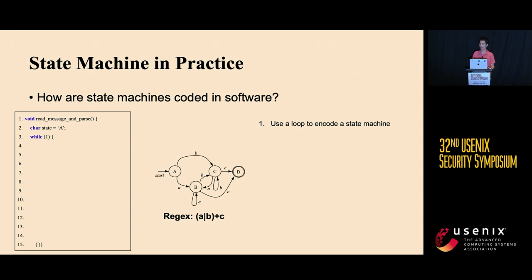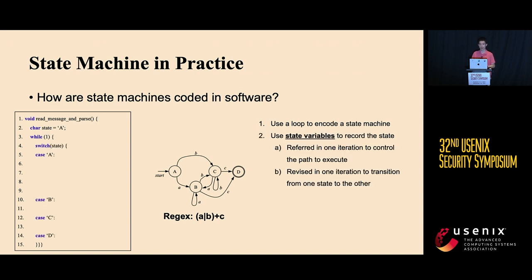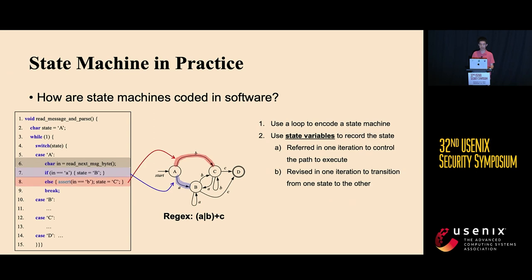At the second line is the state variable called 'state', and the loop is defined at the third line. State variables are used to dispatch execution to different paths in each iteration, with each path implementing logic for a specific state. At the sixth line, the state machine reads an input byte from the input stream. It then checks whether the input byte is character A or B. If character A, the state transitions to B (shown in blue); if character B, the state transitions to C (shown in red). The state variable together with the input bytes decides the behavior of the state machine.